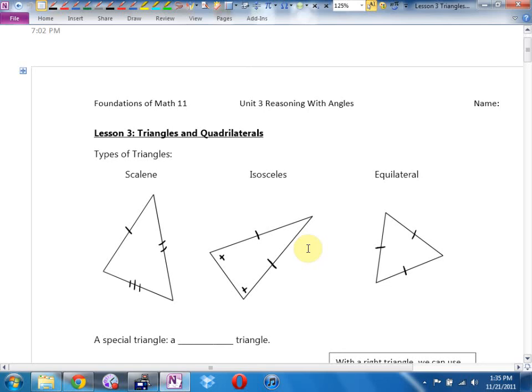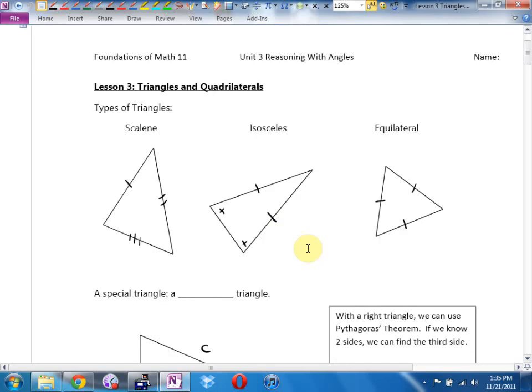First of all, some types of triangles. You may have seen these words before. We have three main types: scalene, isosceles, and equilateral.